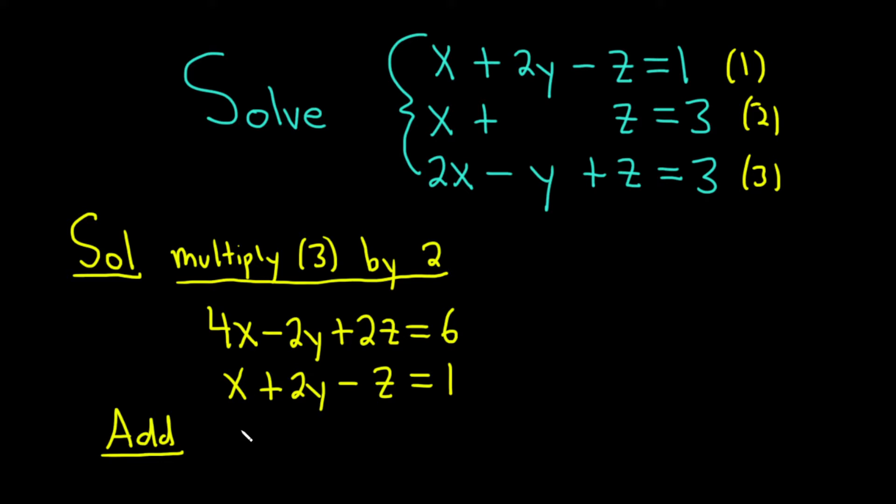And we will eliminate the y variable. So adding, we have 4x plus x, which is 5x. These go away. 2z plus negative z is just positive z. And this is equal to 6 plus 1, which is 7.